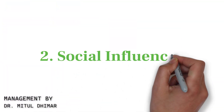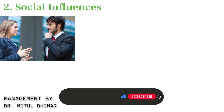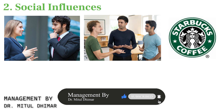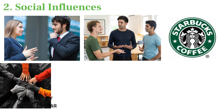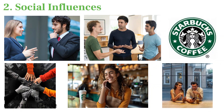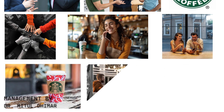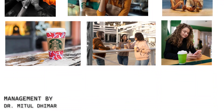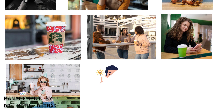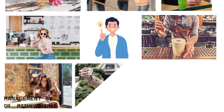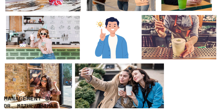Number two: Social Influences. Social influences are about the impact of others on our decisions and actions. Take Starbucks for instance. Starbucks has built a strong community around its brand, with many people seeing it as a status symbol or a place to connect with others. When people see their friends or influencers posting about Starbucks on social media, it reinforces the idea that Starbucks is a desirable and trendy choice. This social influence encourages more people to visit Starbucks and be part of the community.